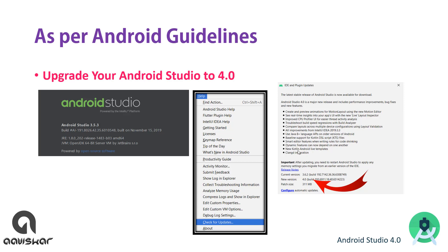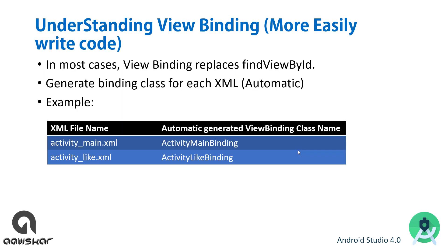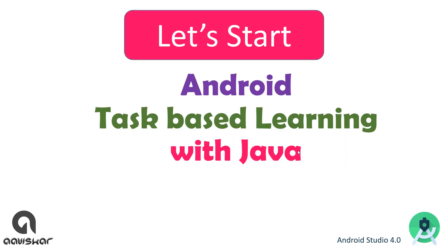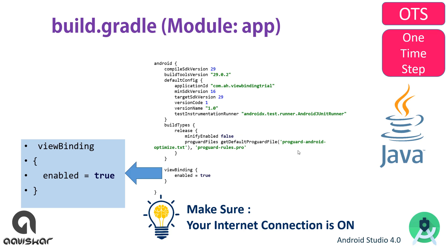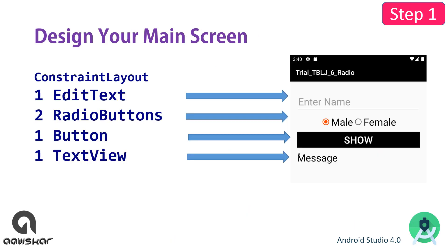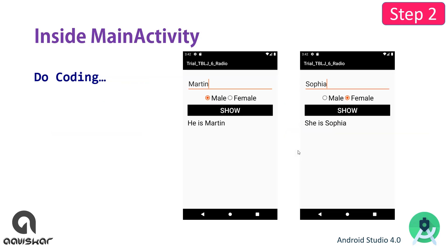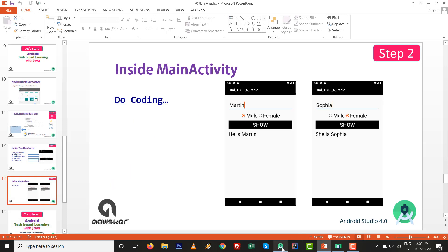I hope you have completed the task. As per the Android guideline, upgrade your Android Studio to 4.0. We are using View Binding in this practical, so it is easy to write the code and it replaces the findViewById. Create a new project with Java in Android Studio 4.0. Inside the build.gradle file, write the View Binding block: viewBinding enabled equals true. Make sure your internet connection is on. Design your screen with one EditText, RadioButtons, a Button, and a TextView to show the result.